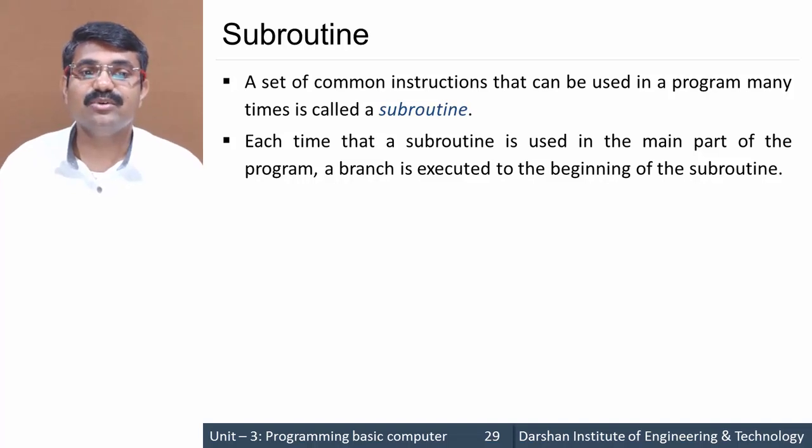A subroutine is called from the main part of the program. For example, in C programming, if we write a program for factorial, we make a common function 'factorial' and call that function from our main program by passing the argument as the value for which we want to find the factorial.